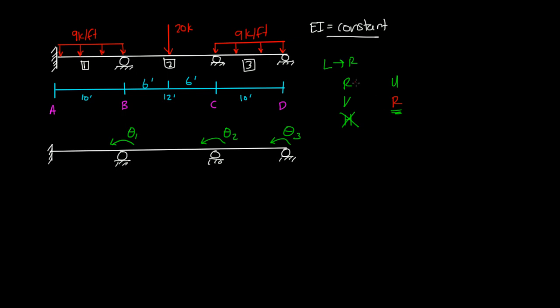Now we move on to restrained. Again, we start with restrained rotational degrees of freedom. Here we have theta 4 at the fixed end. And there's no more rotational restraints. So now we move on to vertical restraints.